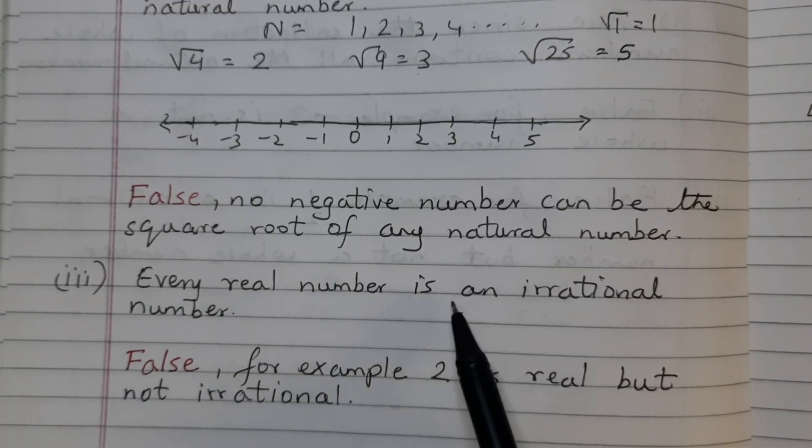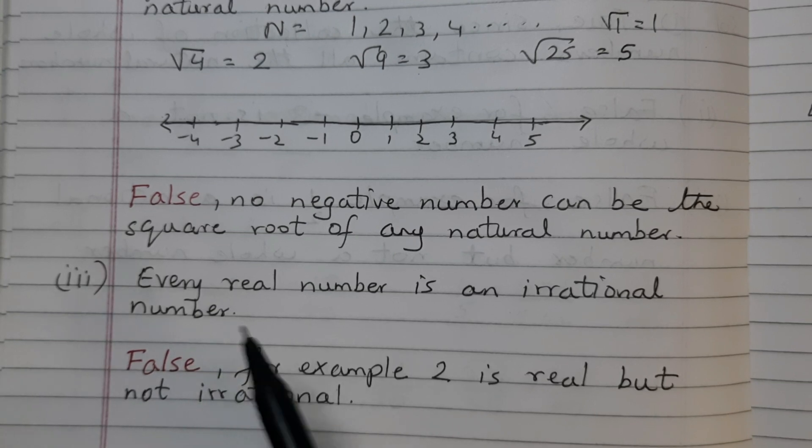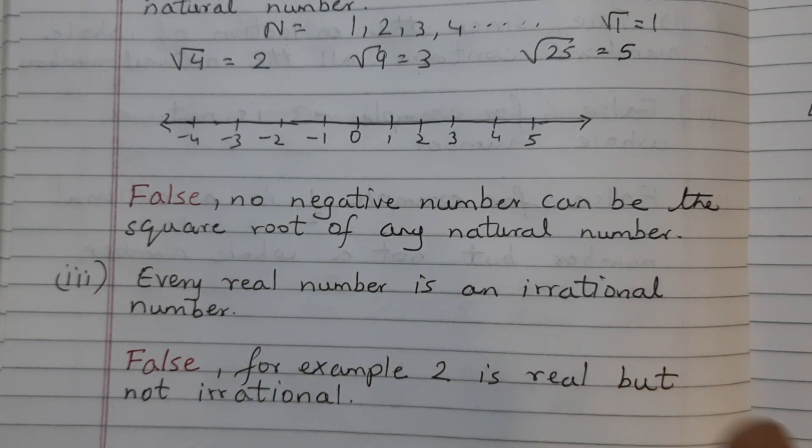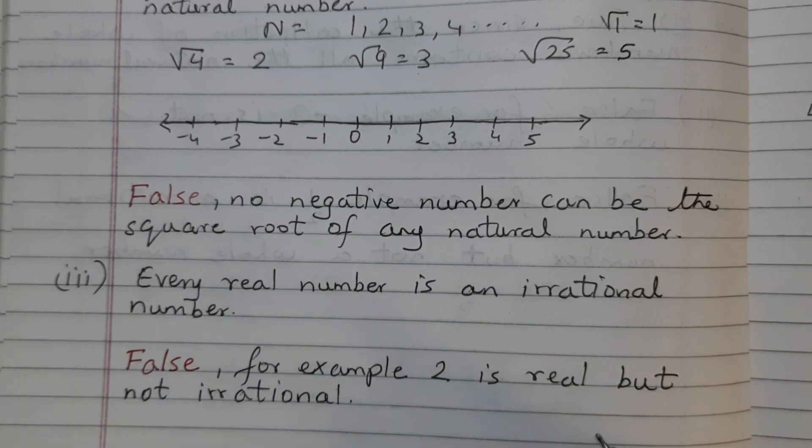Every real number is an irrational number. This is false because real number is a collection of both rational numbers and irrational numbers, not just irrational numbers. For example, 2 is real but not irrational. You can give your own examples.